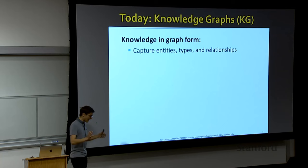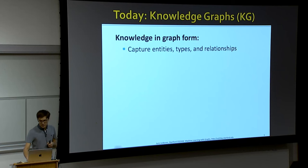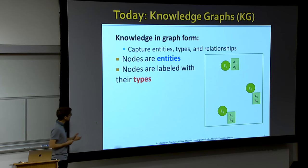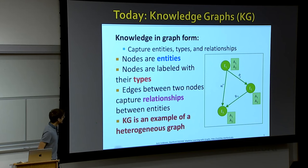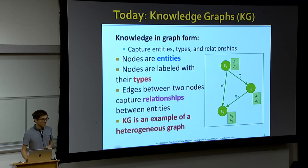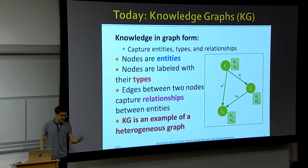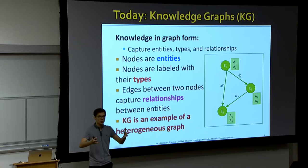Today we are going to further generalize this to the notion of knowledge graphs. Knowledge graphs allow you to capture in graph form — in a relational form — knowledge about entities and their relations. We capture entities, their types, and the relationships between them. Nodes are entities labeled with their types, and edges between two nodes capture the relationship between the entities. A knowledge graph is an example of a heterogeneous graph, but the reason we call these things knowledge graphs is because we encode our knowledge about a given domain in this graphical form — a knowledge base over which you can reason, retrieve, and bring in knowledge to your machine learning model.